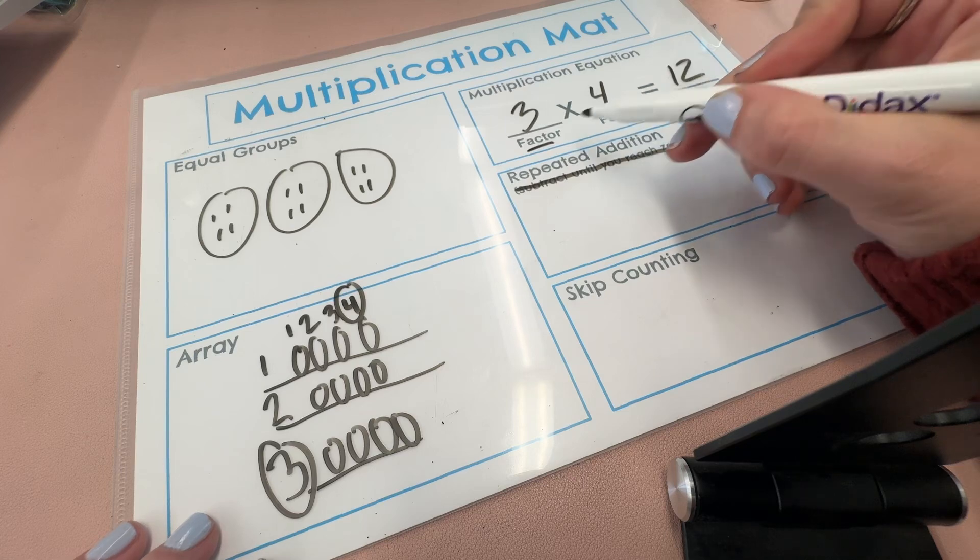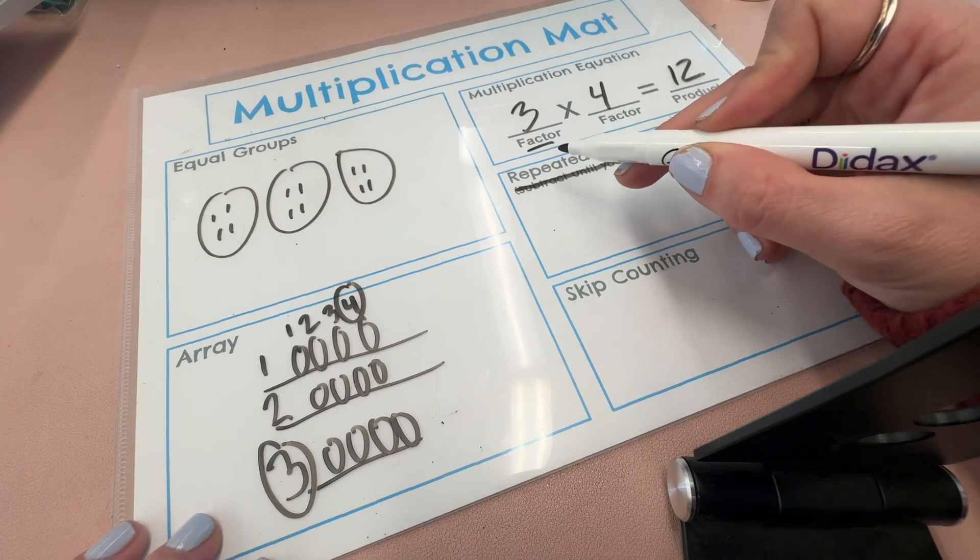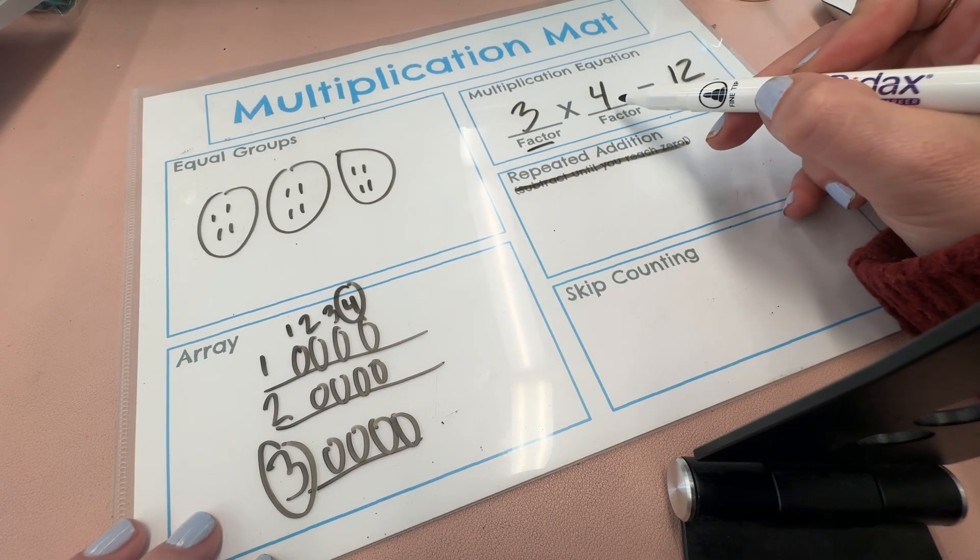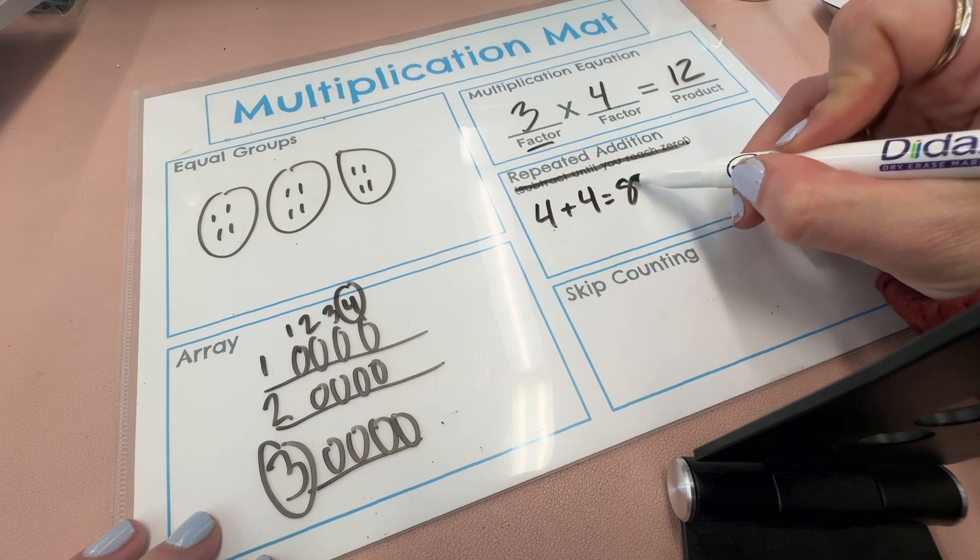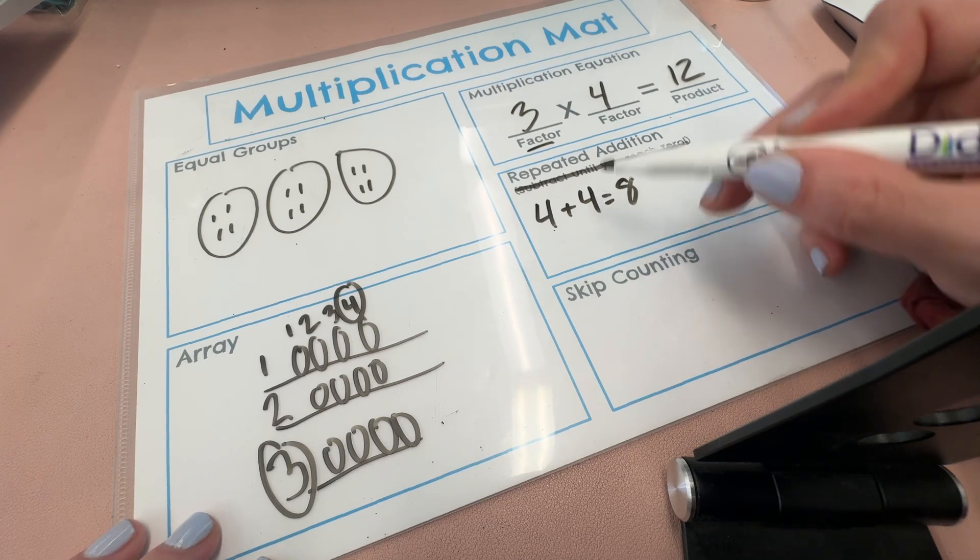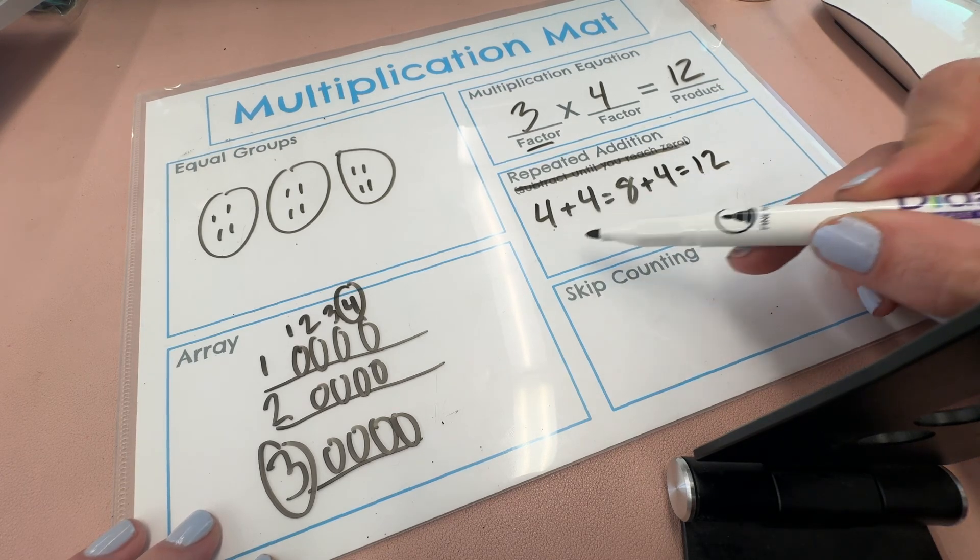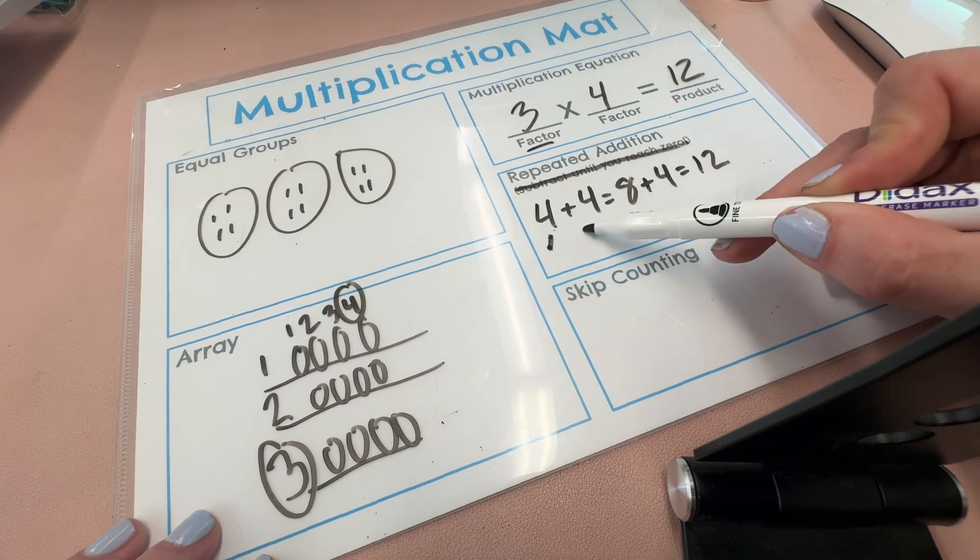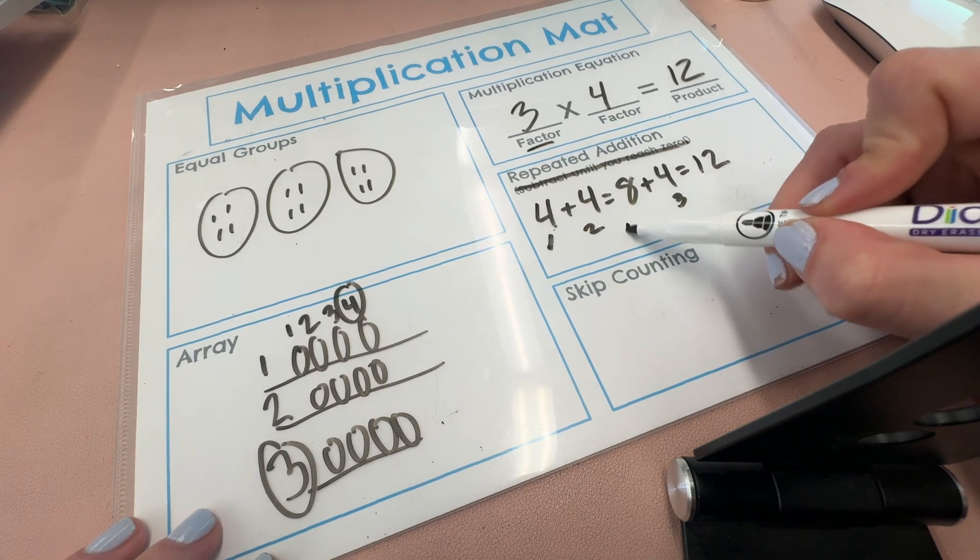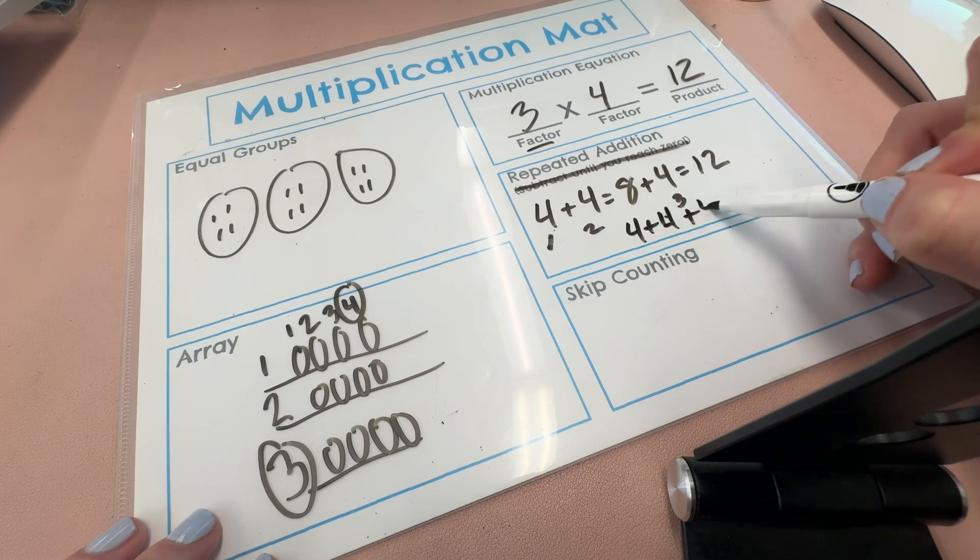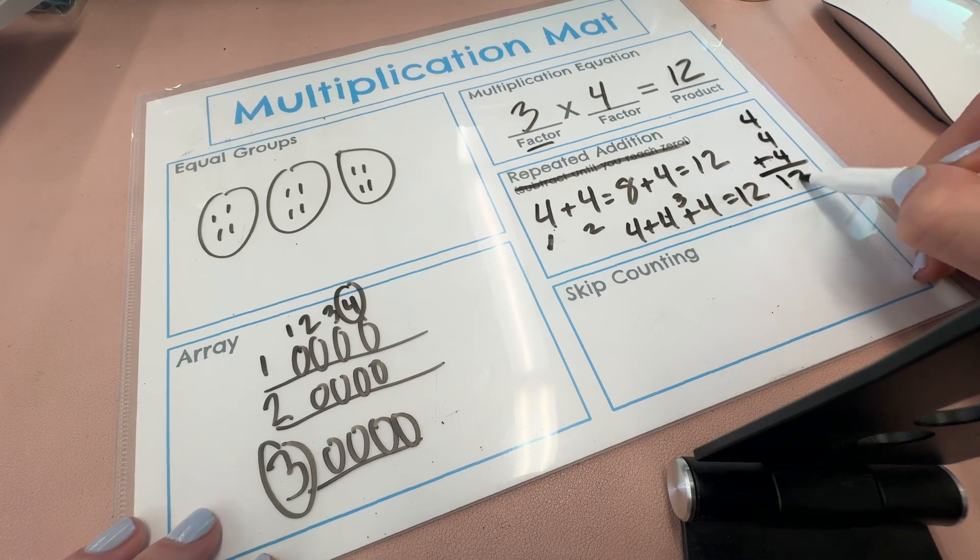In repeated addition, students can choose either three or four and repeatedly add them up until they reach twelve. So I know I have to do three groups of four. So I can do repeated addition using four. So four plus four equals eight. And I only used two fours so far. So I need one more four. I'm going to add another four. And that equals twelve. So I would count how many fours I used. One, two, three fours. So I did three fours and I added them up to get to twelve. You could also do four plus four plus four equals twelve. Or you could even write them in the standard algorithm and find the answer.